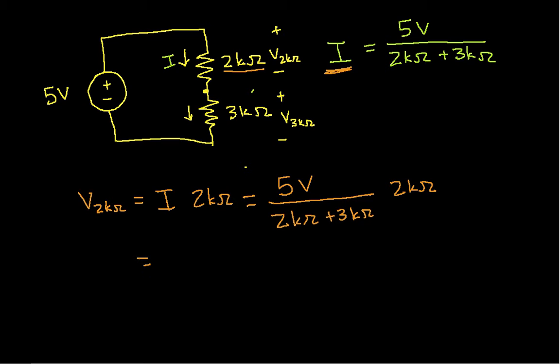And now I'll rearrange things. So I'll write this as 5 volts times 2k ohms over 2k ohms plus 3k ohms. So you can see what I have here is I have the source voltage, 5 volts, times the ratio of the resistor that I'm interested in, the 2k ohm resistor, over the sum of the resistors.